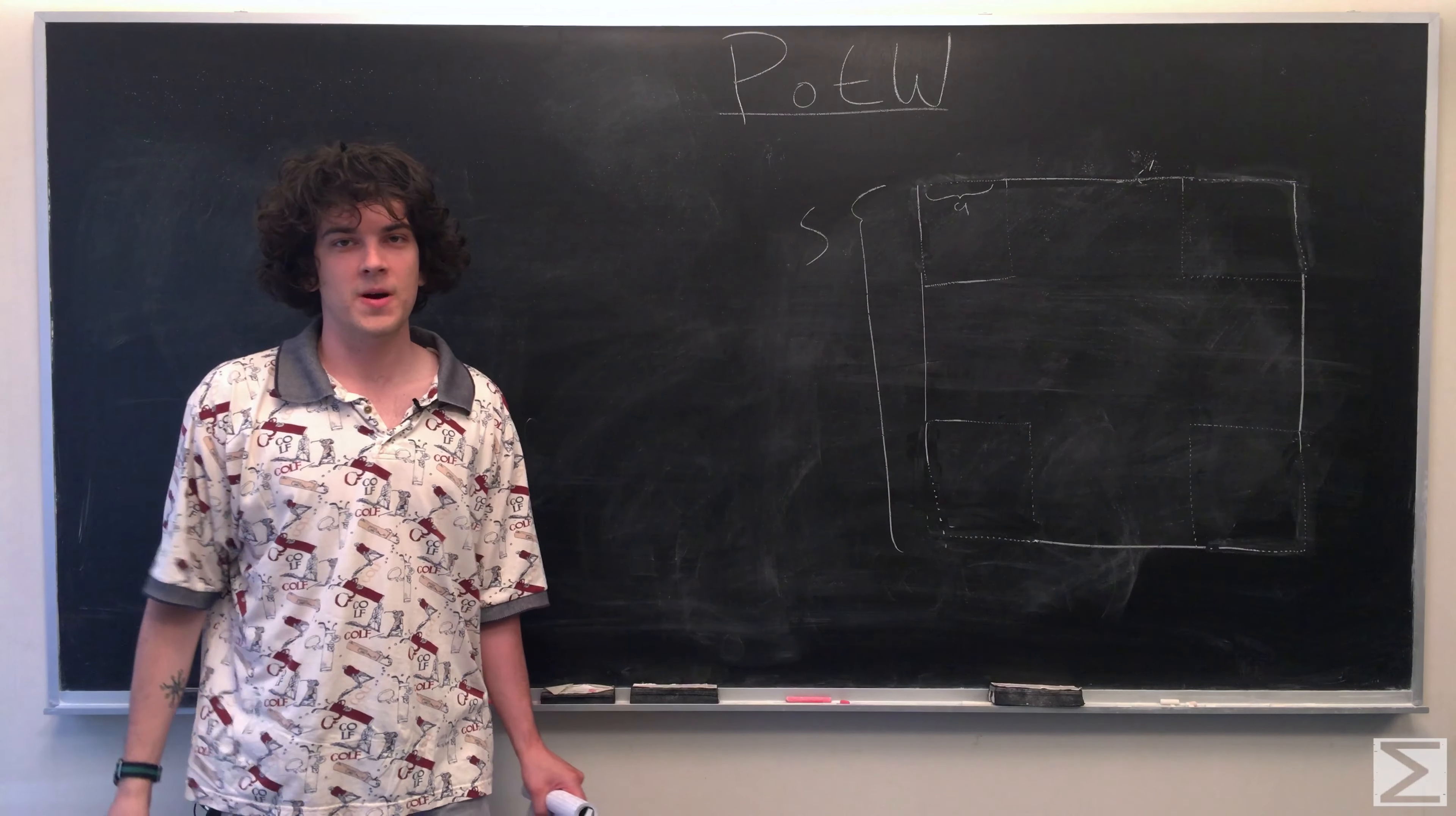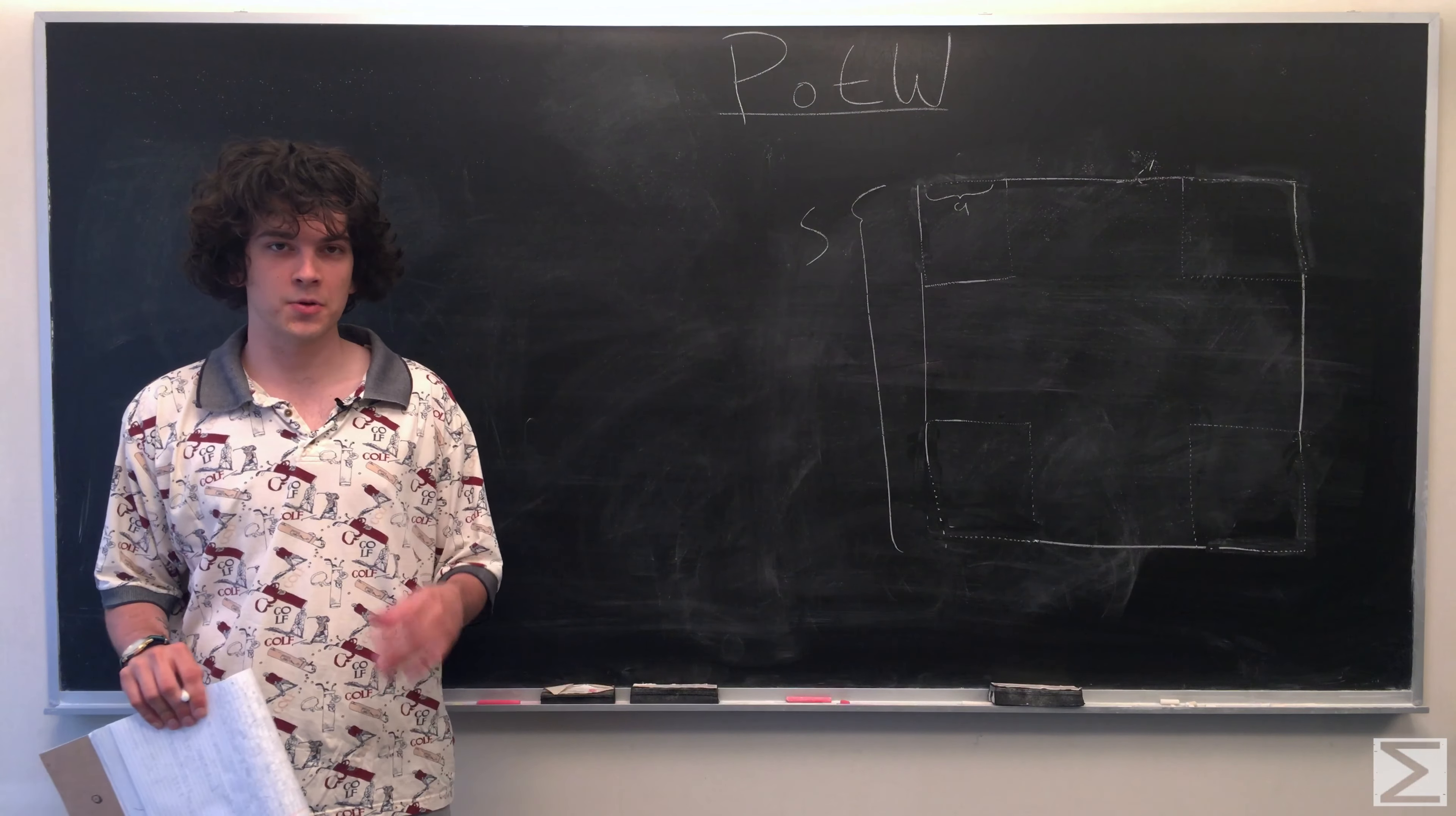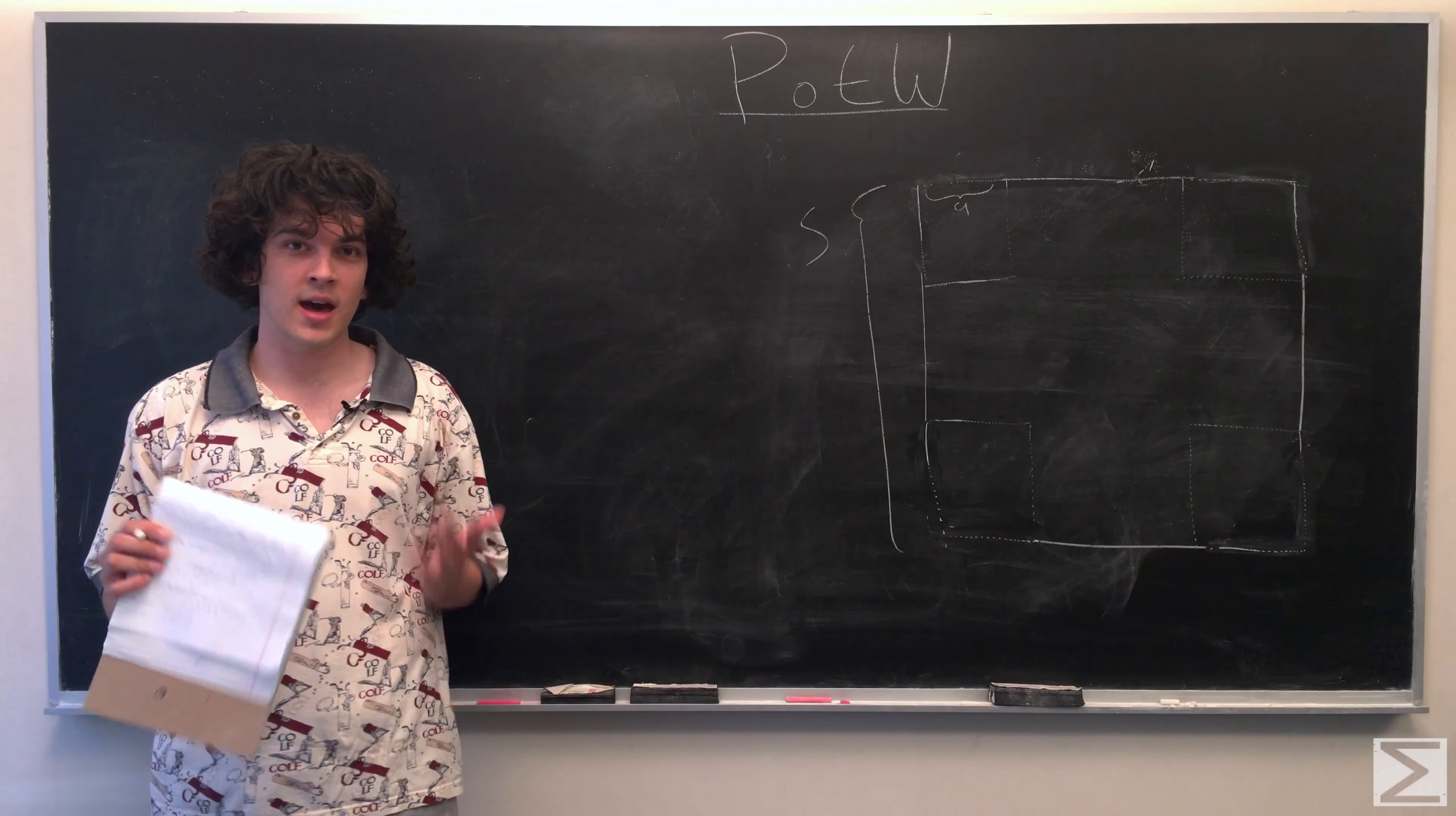Hello, and welcome to the World Wide Center of Mathematics Problem of the Week. This week, the problem asks you to imagine a net of an open-topped box formed by removing squares of side length A off of the corners of a large sheet that is a square of side length S.